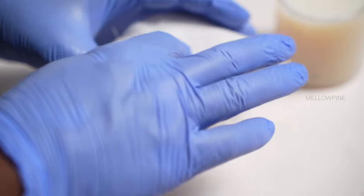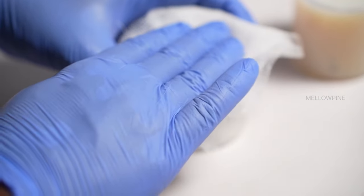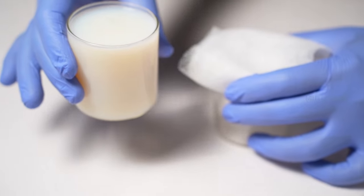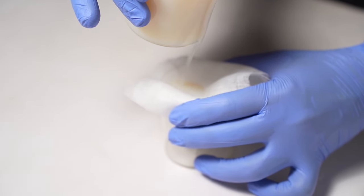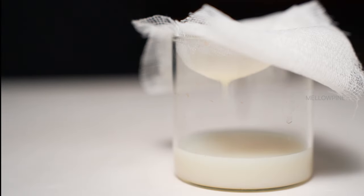After thinning, filtering the polyurethane is a good practice. It helps remove any debris that could clog the sprayer nozzle, ensuring a smooth spraying experience.